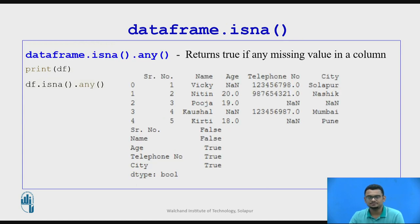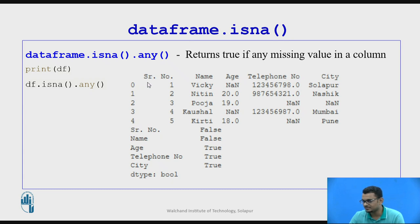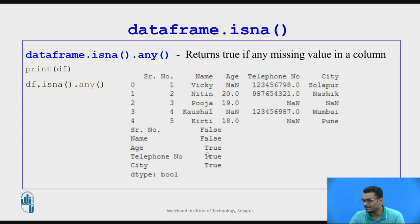Moving ahead, isna().any() is a routine that returns True if any missing value is present in a column. The output of the dot-any() routine tells us, for each column from serial number and name through age to city, whether it contains null values. If you find a True output from this routine, it tells us that a value is missing in that particular column.